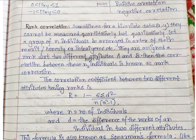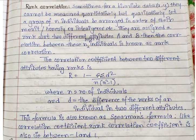For qualitative attributes, we cannot use the simple sample correlation formula; we must use rank correlation. If two attributes A and B are given for n individuals, the rank correlation is: r = 1 − (6·Σd²) / (n·(n²−1)), where n is the number of individuals and d is the difference of ranks of an individual across the two attributes. The highest value is +1 and the lowest is −1.